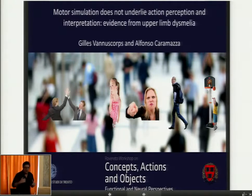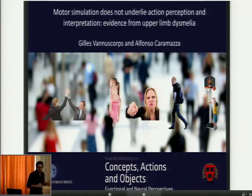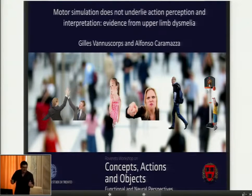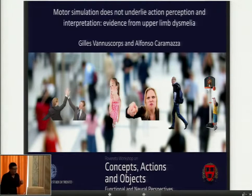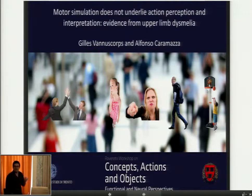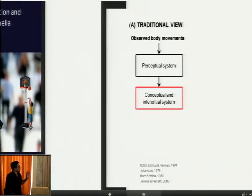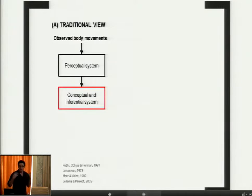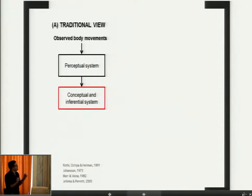We can, for instance, see that someone is working happily or working sadly. And in this study, we try to understand whether these abilities rely on a process of motor simulation. These questions might be surprising to some of you, because traditionally action perception is not a function of the motor system. Action perception is assumed to rely on computations occurring in a perceptual system, a conceptual system, an inferential system, and so on.